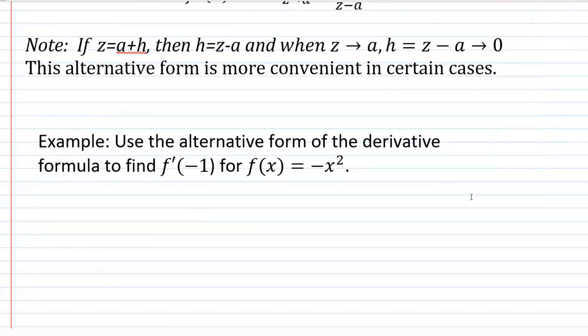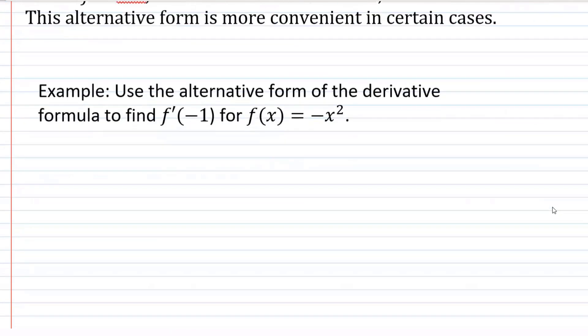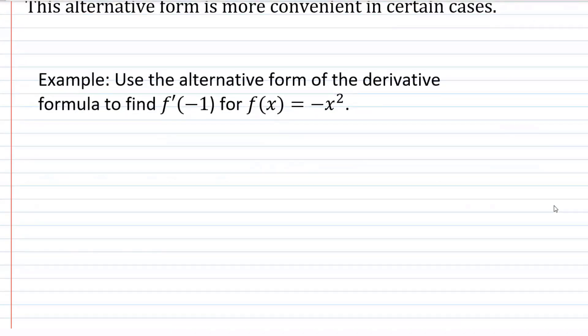So we're just going to practice using that form on this problem. It says use the alternative form of the derivative formula to find f prime of negative one for f of x equals negative x squared. The alternative form, so we're going to use f prime of a equals the limit as z gets closer to a of f of z minus f of a over z minus a. Now in this version, z is a variable, whereas a is a constant, a fixed value.